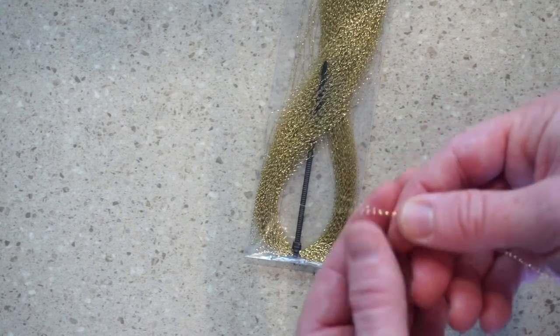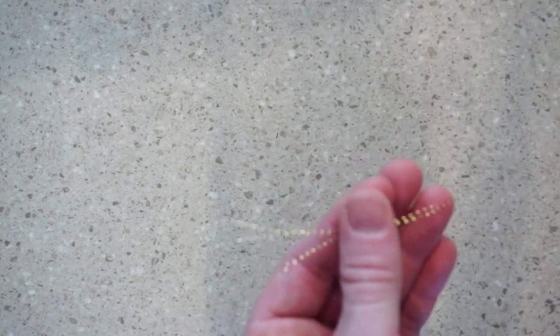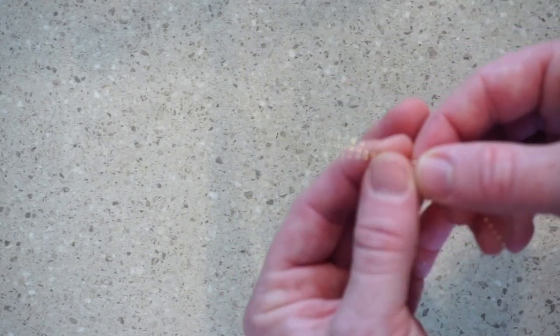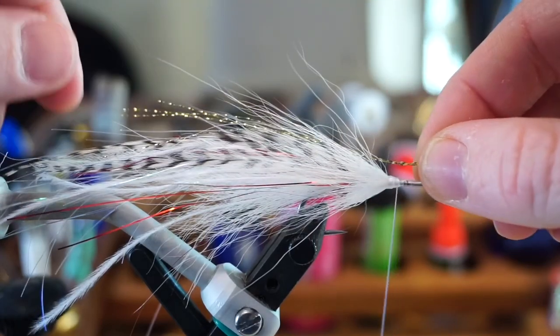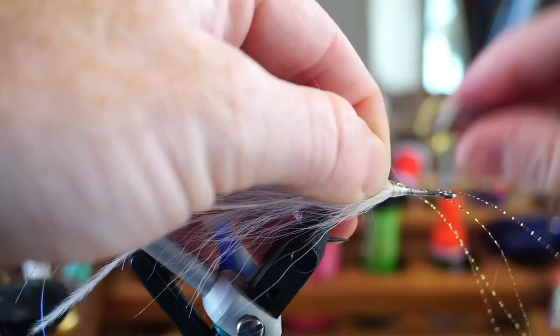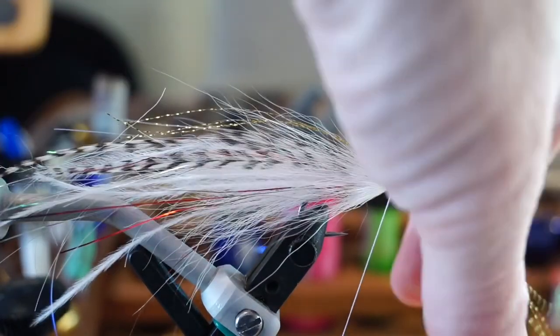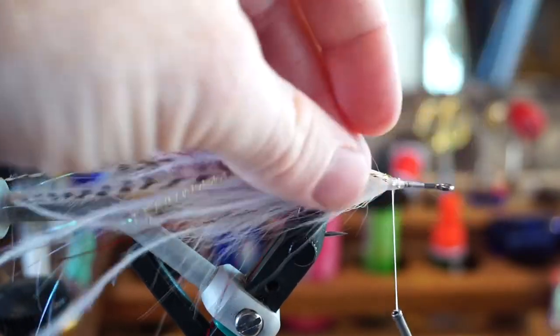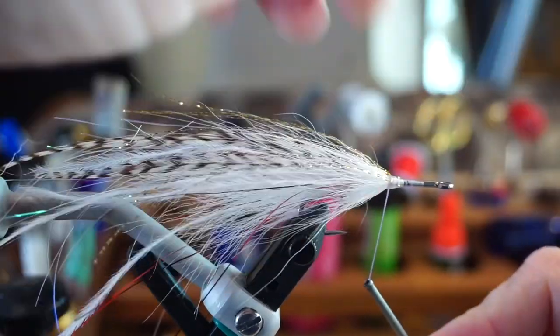All right, for the second bit of flash, I'm going to use about three or four strands of crystal flash here. Tie in the flash on top of the hook on one side of the fly. Then pull the forward facing fibers rearward and tie them in on the other side, making a bit of a cape over the back of the fly.